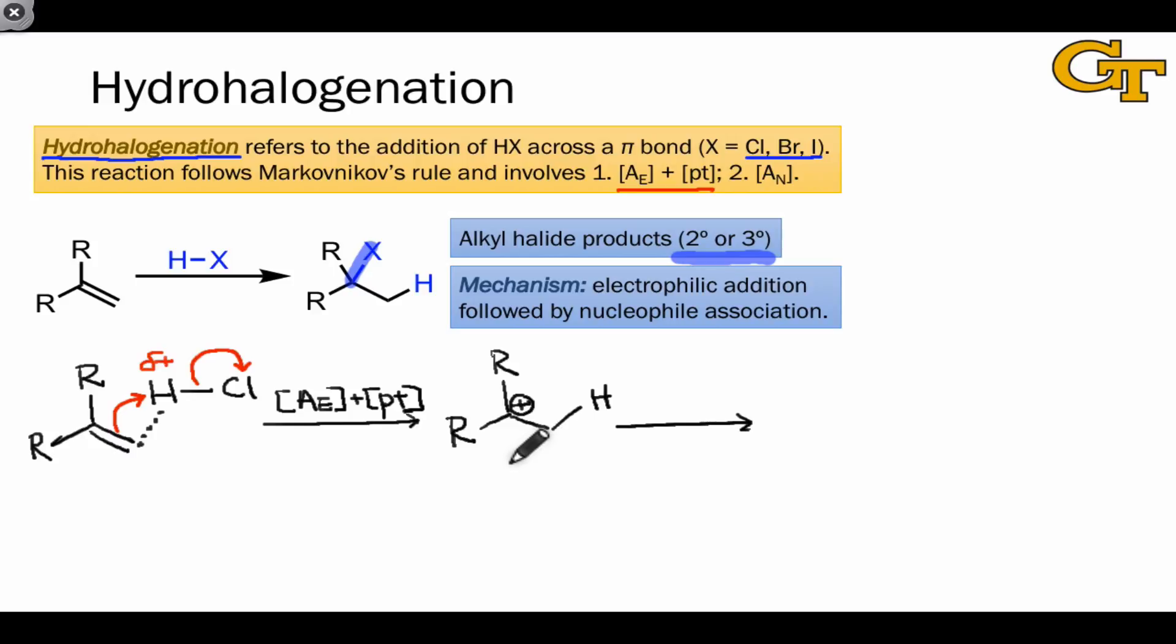Notice that an important byproduct of the first step is Cl minus, the conjugate base of HCl. Cl minus is a decent nucleophile, especially in the presence of a strong electrophile as a carbocation. And so it can associate to the carbocation in an A sub N elementary step, leading to the alkyl halide product.